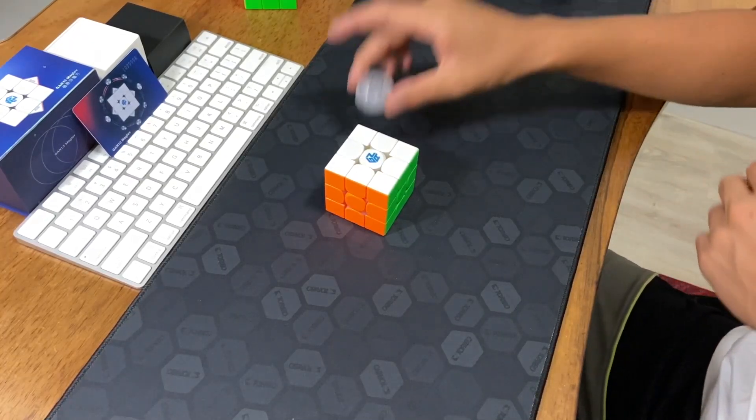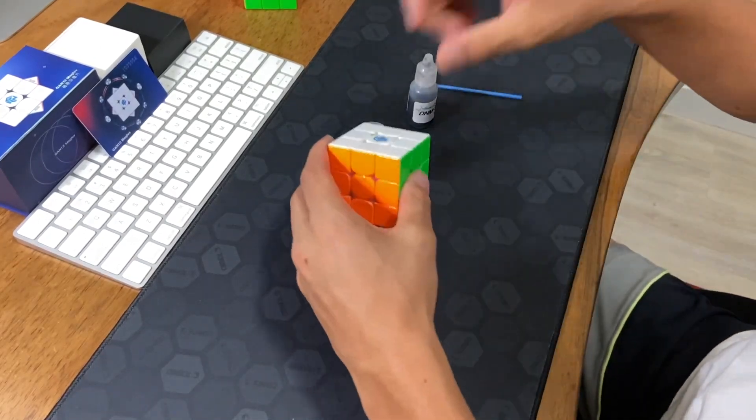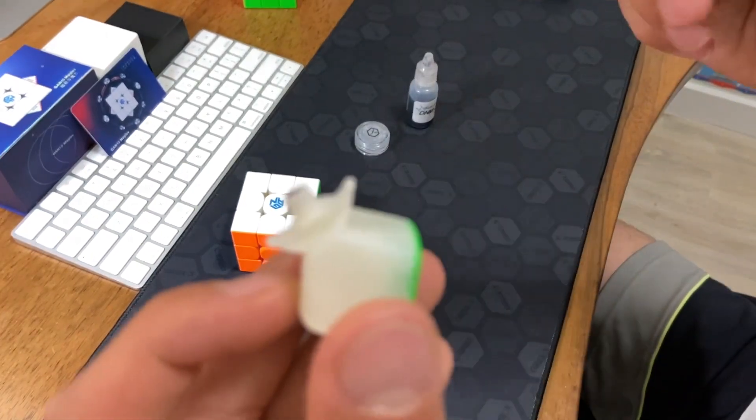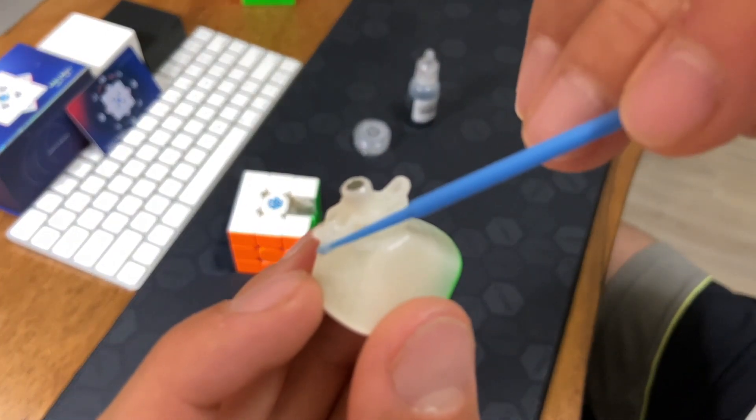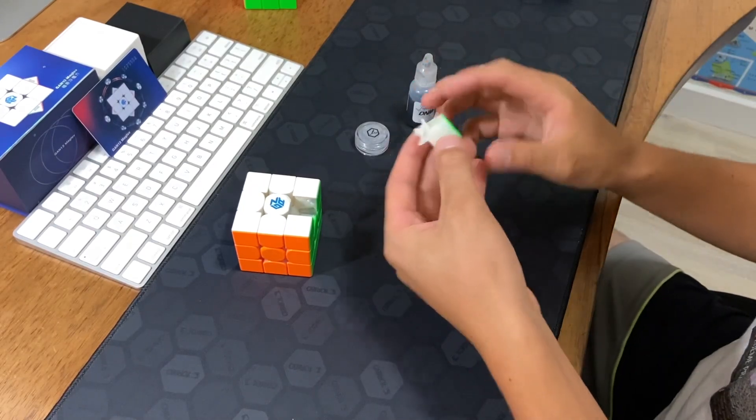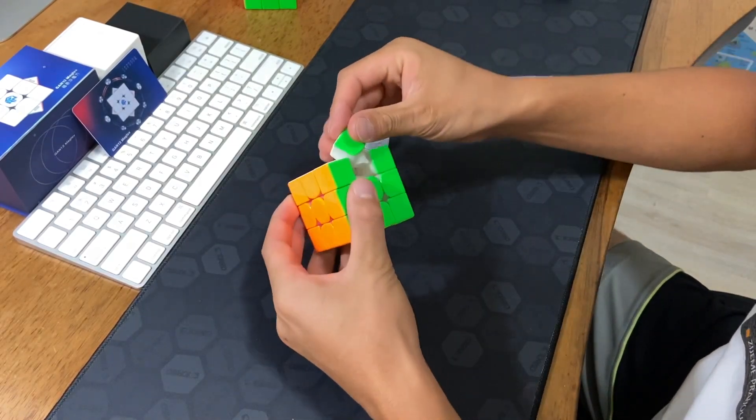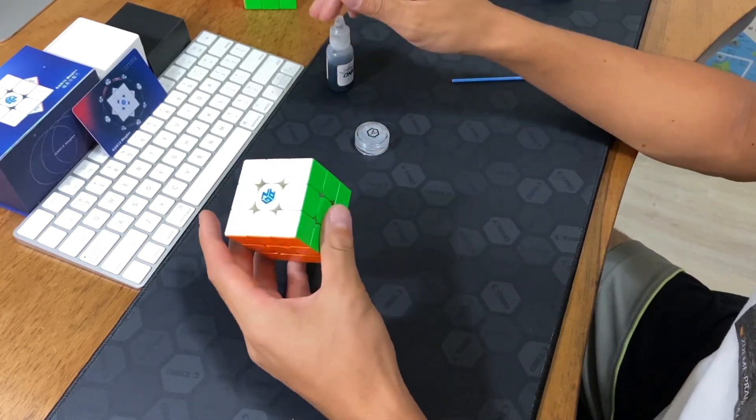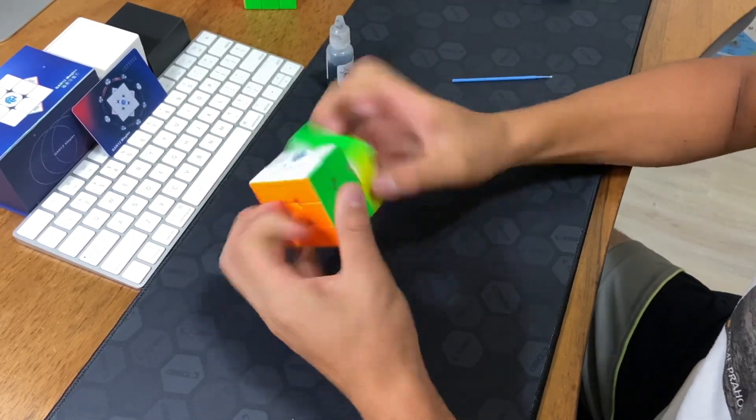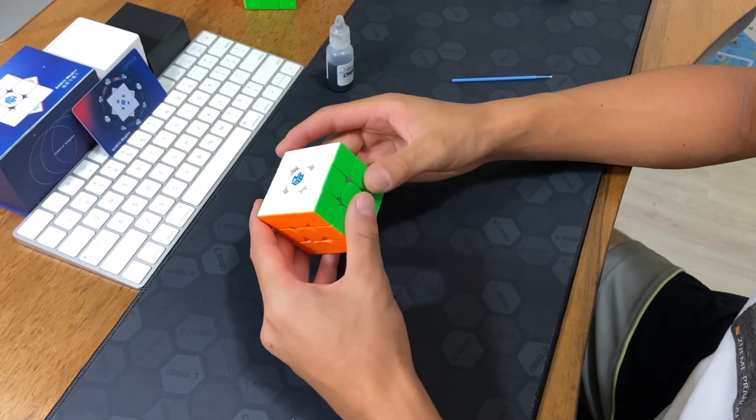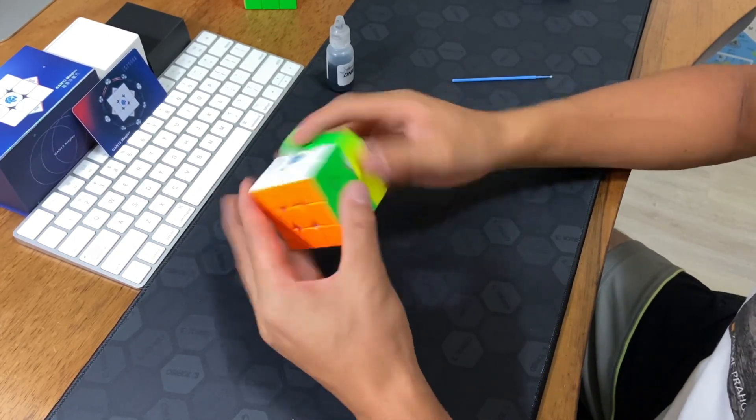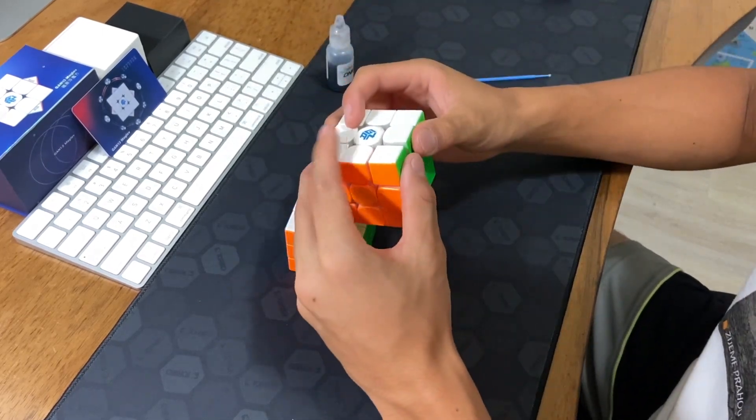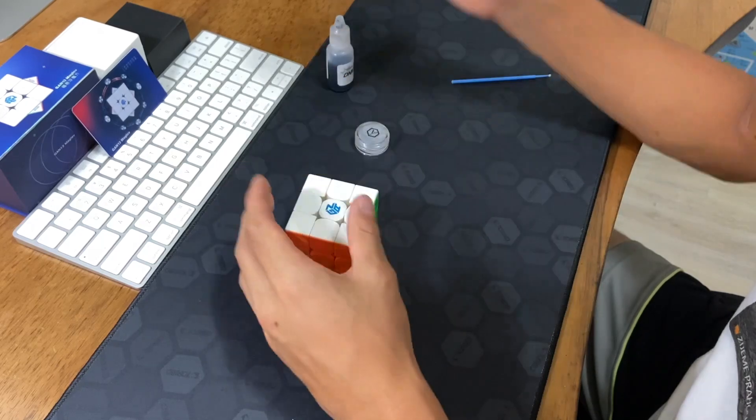And for my lubes, I use Gravitas and DNM. Basically what I do is I take out an edge. If you can see here, there are two tracks. One there and one there. I put lube in both of those tracks. I put it back in. And I do it for three more edges. And then I break that in. And depending on how that feels, I either put one drop or two drops of DNM. In the 13, I put two drops. But in the 12, I put one drop. It's very cube specific.